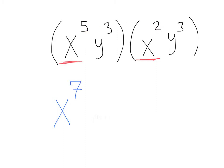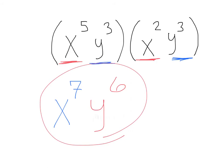Next, let's move on to our y's. Here we have y to the 3rd times y to the 3rd. We can add these exponents — 3 plus 3 — that's going to give us y to the 6th. And that would be our final answer.